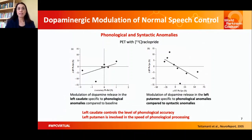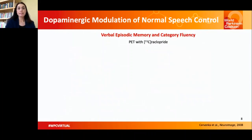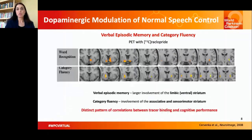On the other hand, modulation of dopamine release in the left putamen was shown to be specific to phonological anomalies compared to syntactic anomalies, suggesting that the left putamen is involved in the speed of phonological processing. Another study demonstrated larger involvement of the limbic striatum in verbal episodic memory and greater involvement of the associative and sensorimotor striatum in category fluency, establishing distinct patterns of correlations between tracer binding and cognitive performance.